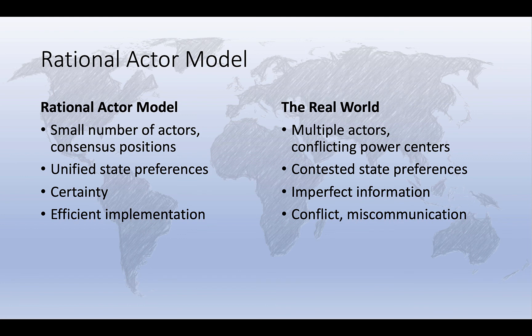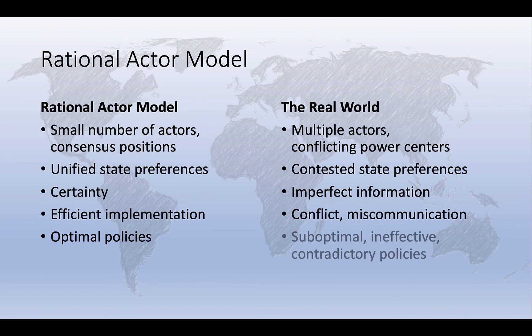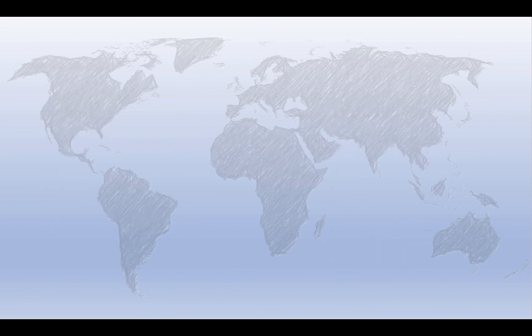And finally, the rational actor model usually views policy as the optimal outcome of the decision-making process — that is, it views the policy outcomes that result from the process as the best available option in pursuit of the specific goal. In reality, policies can often be suboptimal, ineffective, sometimes even contradictory or self-defeating. Despite all its limits and shortcomings,